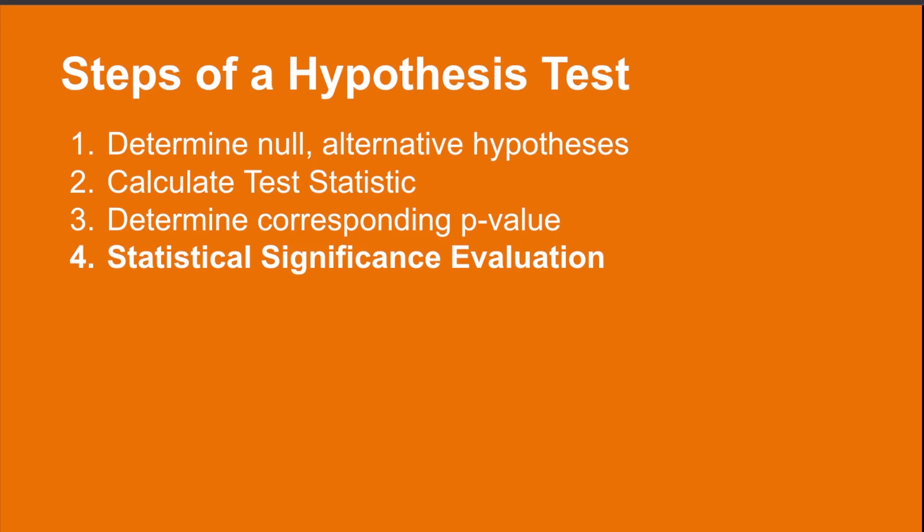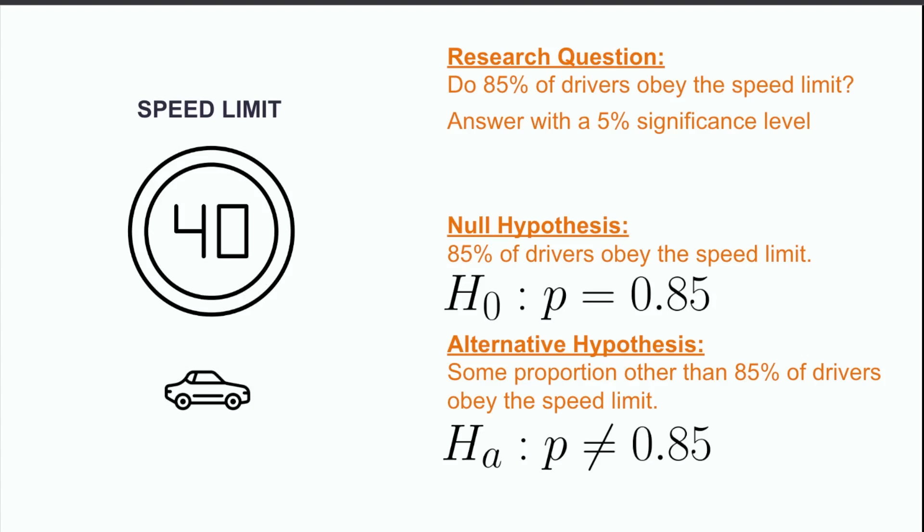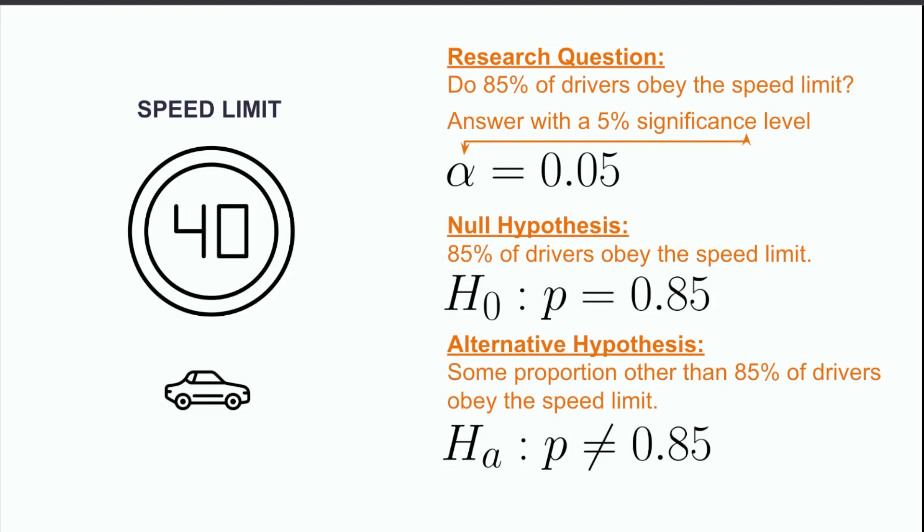In step 4, the calculated p-value is compared with the threshold of statistical significance. This threshold is generally given at the beginning of the question. For example, in our speed limit problem, we should include the statement that we hope to evaluate the hypothesis test at a 5% significance level. Mathematically, we have that alpha is equal to 0.05. This alpha is then compared to our p-value.